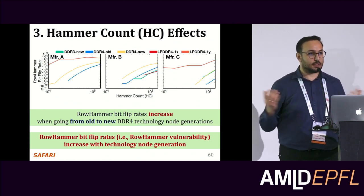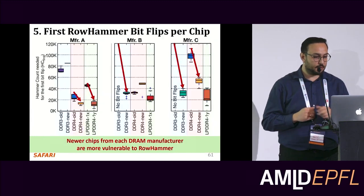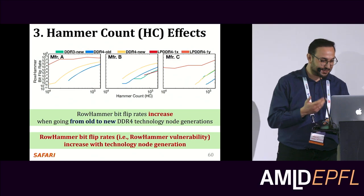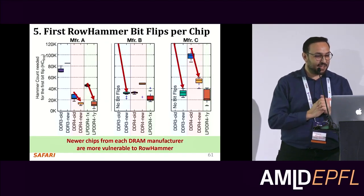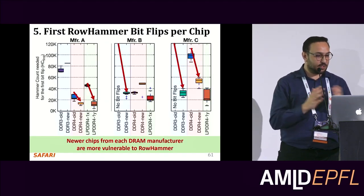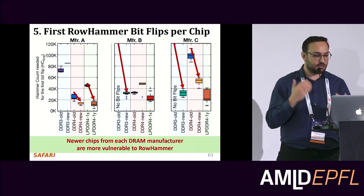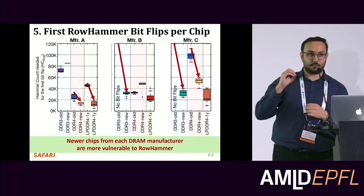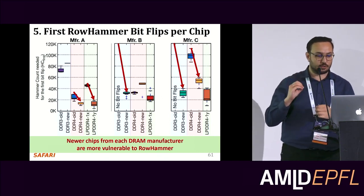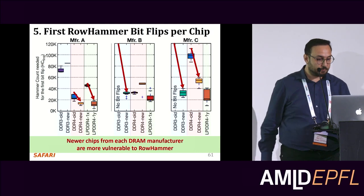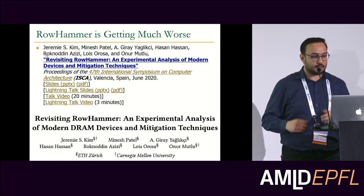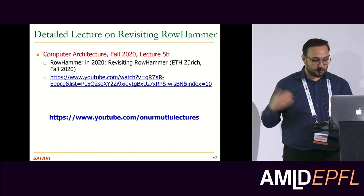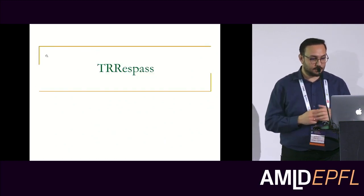Here is some experimental data showing the number of activations needed to induce a bit flip. From old to new modules, the necessary number of activations is getting much lower, telling us that Rowhammer is getting much worse. Meanwhile, from 2014 to 2020, DRAM chips became more vulnerable, and DRAM manufacturers implemented some on-DRAM die mitigation mechanisms called Target Row Refresh (TRR).